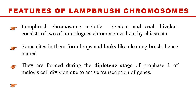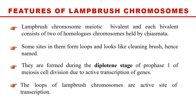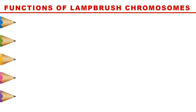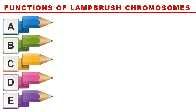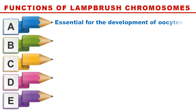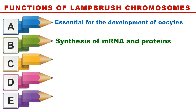Another feature is that the loops of lampbrush chromosomes are active sites of transcription. Regarding functions, lampbrush chromosomes are essential for the development of the oocyte.